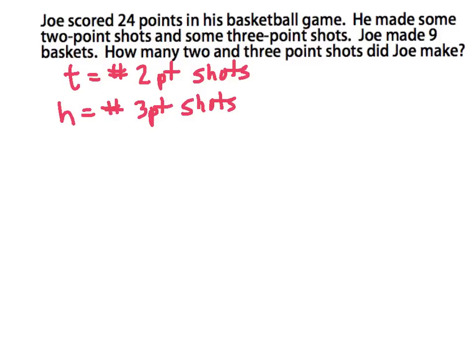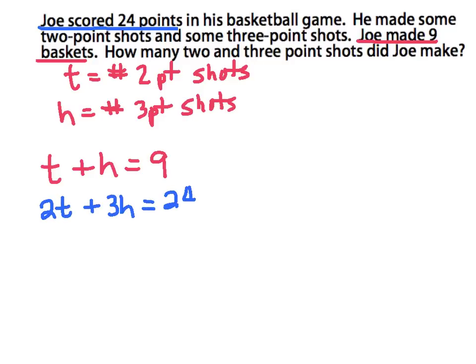I know how many baskets Joe made — he made 9 baskets altogether — so my first equation is T plus H equals 9. I also know something about the points: he scored a total of 24 points, with some 2-point shots and some 3-point shots. So I put the value of the points with my variable: 2T plus 3H equals 24.